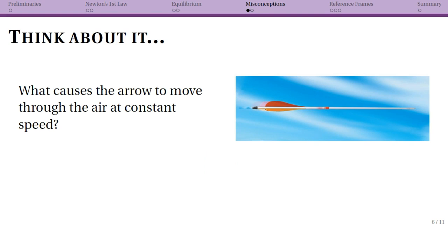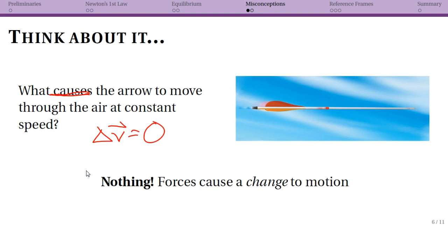Now what a lot of people might say, and this is where the misconception comes in, is that there's some force of motion or the force of the bow, and that's not correct. Technically nothing is causing the arrow to move through the air at a constant speed. Now this either is going to seem very trivial to you, or you might want to argue with me about it for a little bit, but what we're saying is that in this situation delta v is equal to zero.